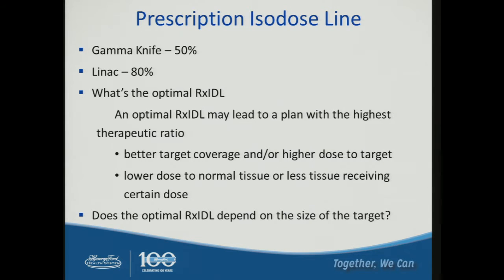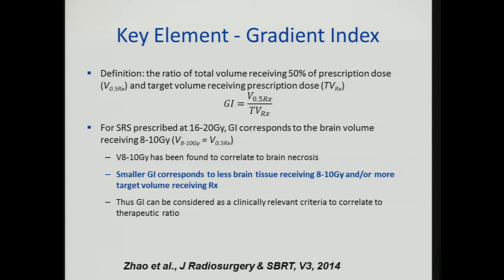We are studying this optimal prescription isodose line depending on the size of the target, starting with the gradient index. This is defined by 50% of the prescription isodose volume divided by the total target volume. Our prescription dose is usually about 18 to 20 Gray, so 50% is about 8 to 10 Gray — a very important indicator for brain necrosis. A smaller gradient index corresponds to less dose to the normal brain at 8–10 Gray, which is why we consider this a clinically relevant criterion.